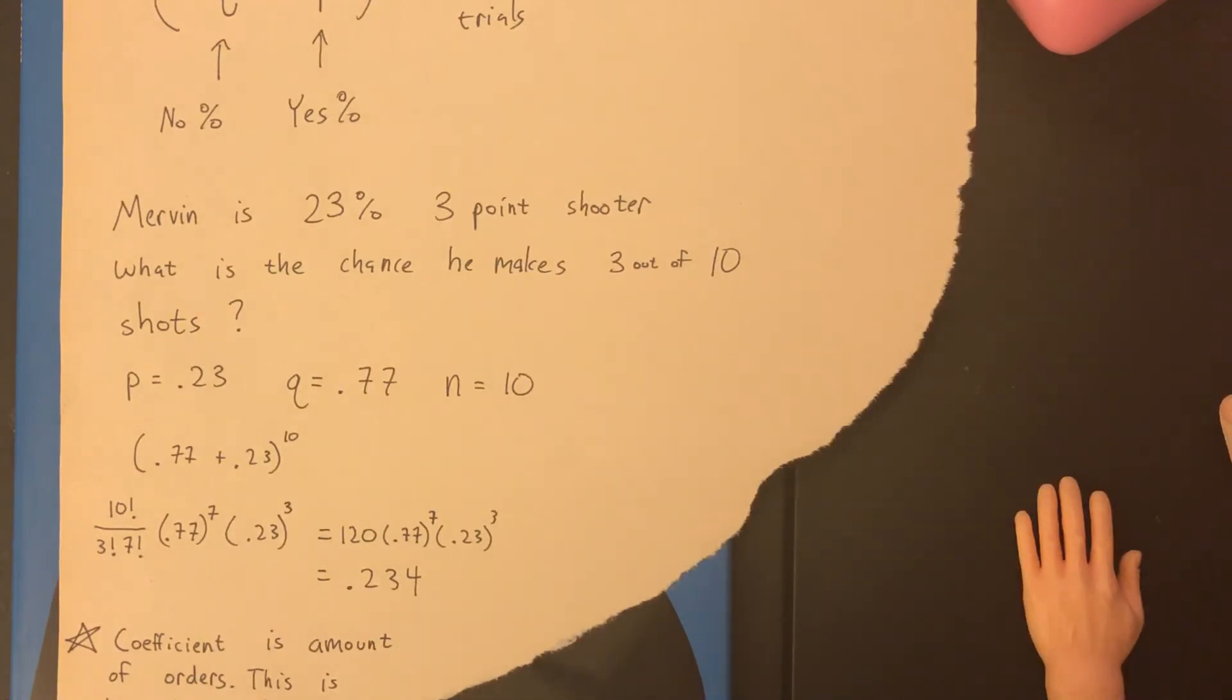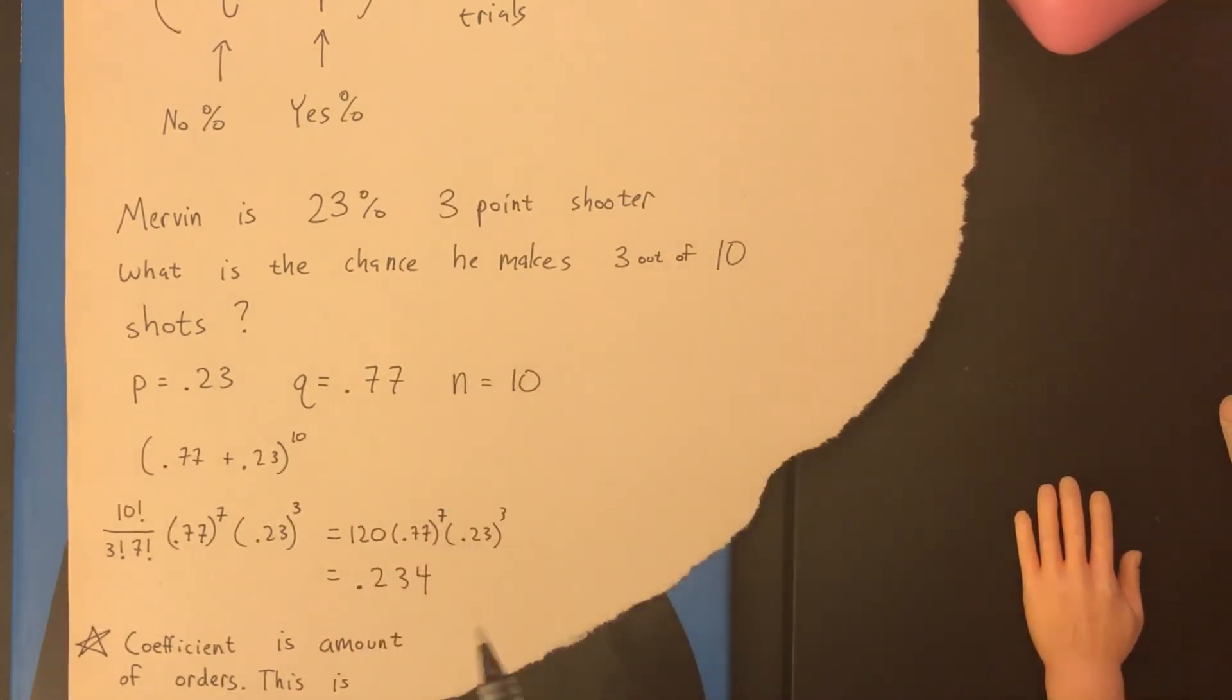The issue with doing that is about order. For example, who's to say he makes the first three then misses the next seven? He could miss the first seven and then make the last three. He could go make, miss, miss, make, miss, miss, make, miss, miss, miss. Who knows all the possibilities? So that's why this binomial theorem really helps you to do it as a shortcut.